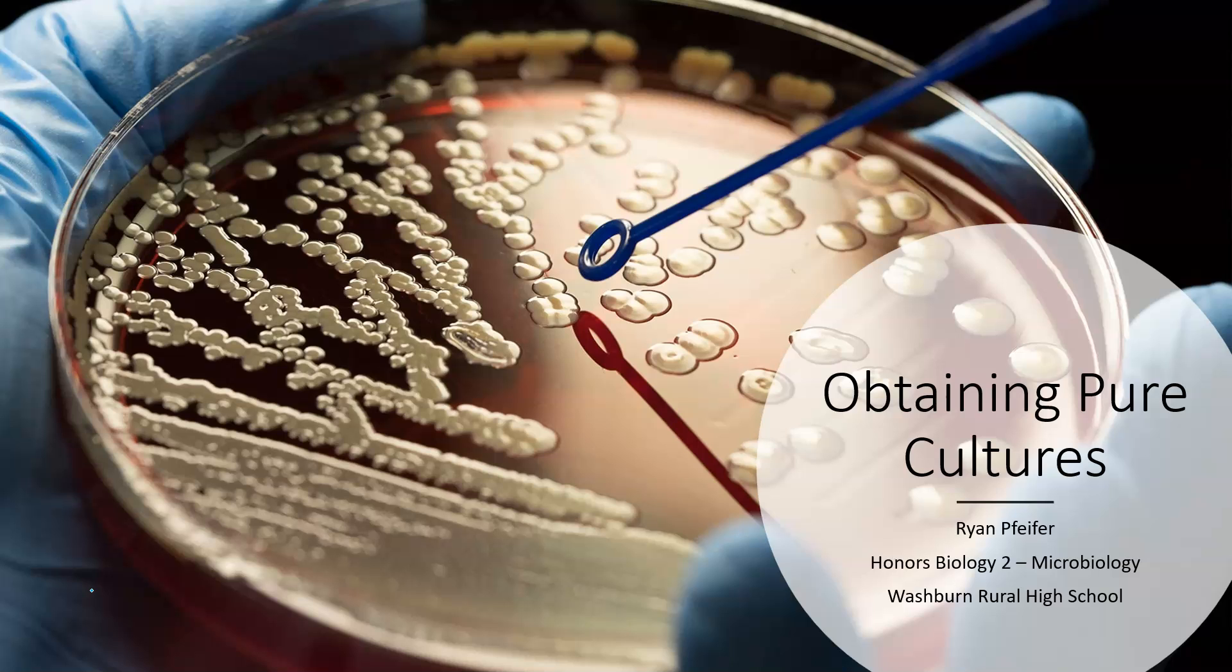There's really one method we're going to focus on and that is the streak plate method. On this thumbnail you can see a proper streak plate which has a section of bacteria that is very concentrated. As we go through that streak plate method which you've done in class, you can successfully isolate pure cultures that you can then take with your inoculation loop and transfer as inoculum to whatever sample you're working with.